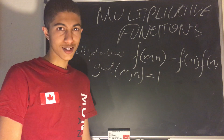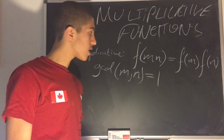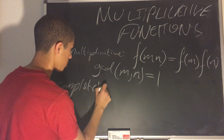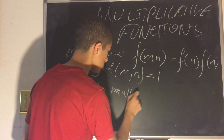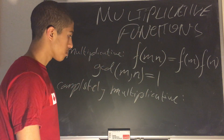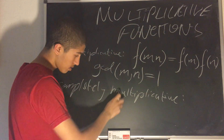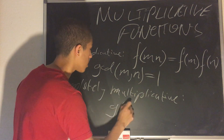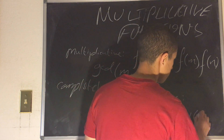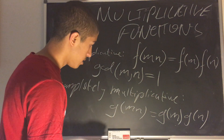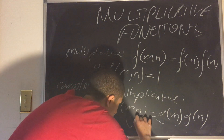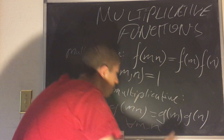Well, let's ask ourselves what happens when that condition is not necessarily met? Then we have complete multiplicativity. A completely multiplicative function — let's call it g — satisfies g(mn) = g(m) times g(n) for all m and n. And that is the condition which is not required in simple multiplicativity.